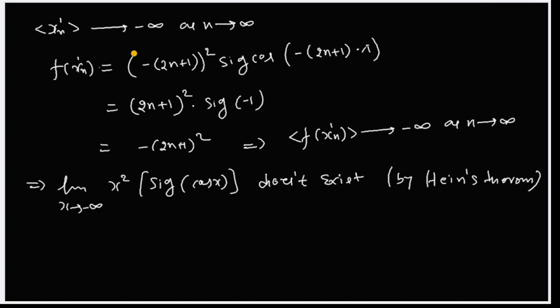We put this sequence into the function and as n tends to infinity, we get a different value. This means our limit does not exist, by the sequence theorem. This is one way to find a limit or check whether it exists or not.